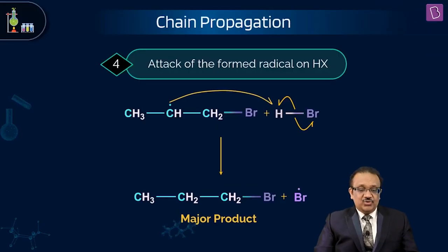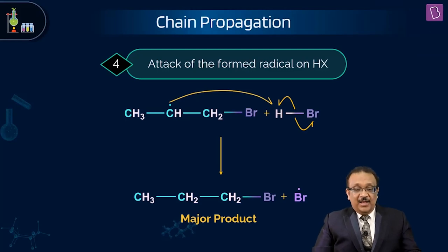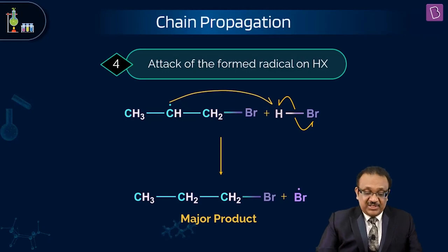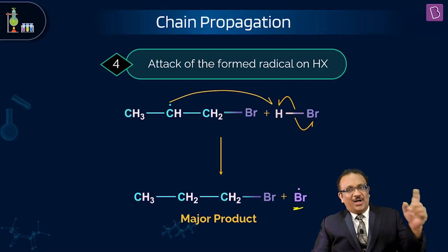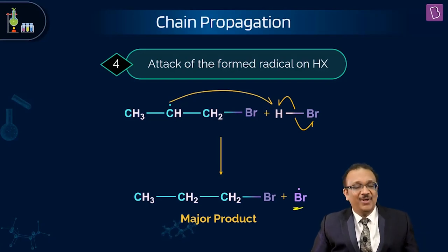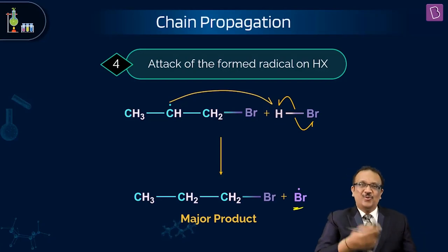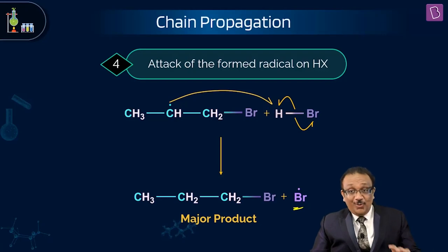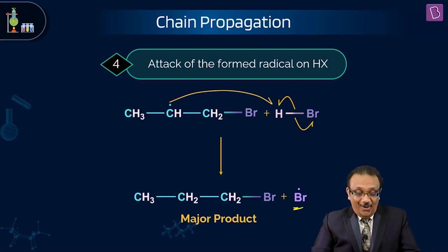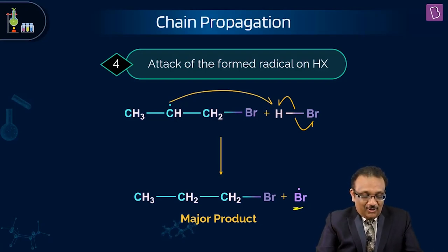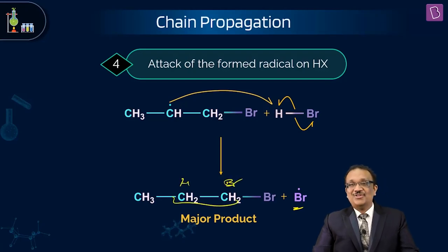We have secondary radicals. Now in step two of propagation, HBR comes in: the secondary radical abstracts H from HBR, the product forms, and a new Br• radical is produced — which goes further in the chain. Termination will happen, but we don't care. The main propagation is what matters. And we get HBR added in anti-Markovnikov fashion.